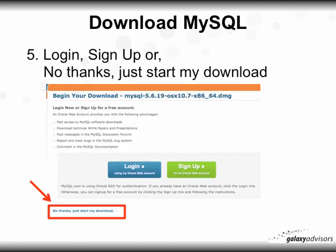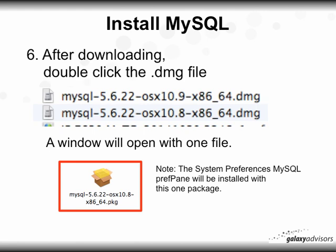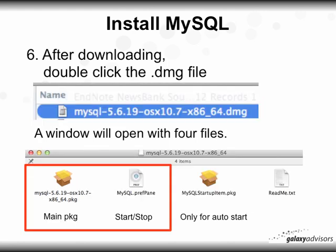Once you do that, you're going to get a login, sign up, or 'No thanks, just start my download' prompt. You can click the 'No thanks' option highlighted, or log in or sign up. After downloading, double-click the .DMG file. For the current 10.9 or 10.8 versions, a window will open with one file, and the MySQL preference pane will be installed with that single package.